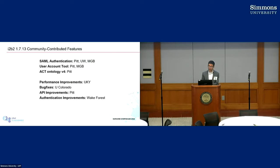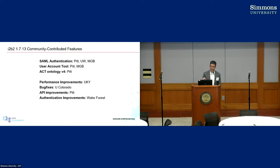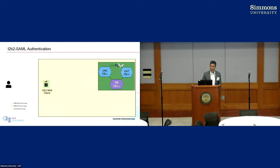In this release, I want to highlight that we maintain the core software but we're a small group — we need your help. We definitely encourage collaborations and even submissions of features that people have developed at other institutions. People submit pull requests on GitHub of things they've developed, and we actively look at those and incorporate the ones we can into the core software. If you submit a pull request and we don't get in touch with you, drop us an email or a message to the install group. The SAML stuff and user account was a collaboration with Pitt and also UW. ACT Ontology V4 comes from Pitt, and we had performance improvements and bug fixes and API improvements from Kentucky, Colorado, Pitt, and Wake Forest. It continues to be an active community enhancing even the core software.